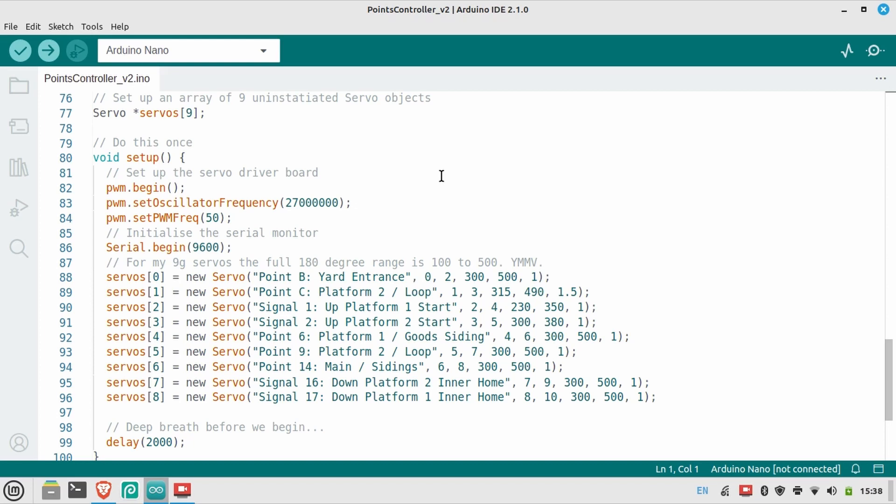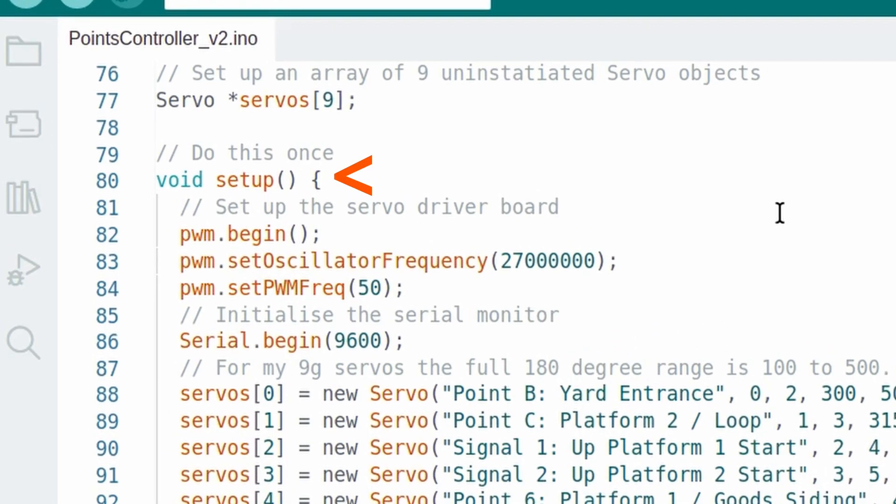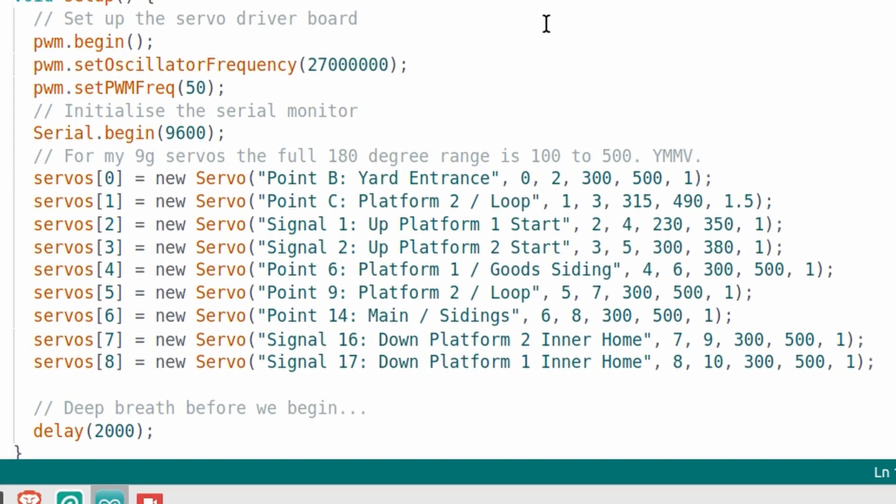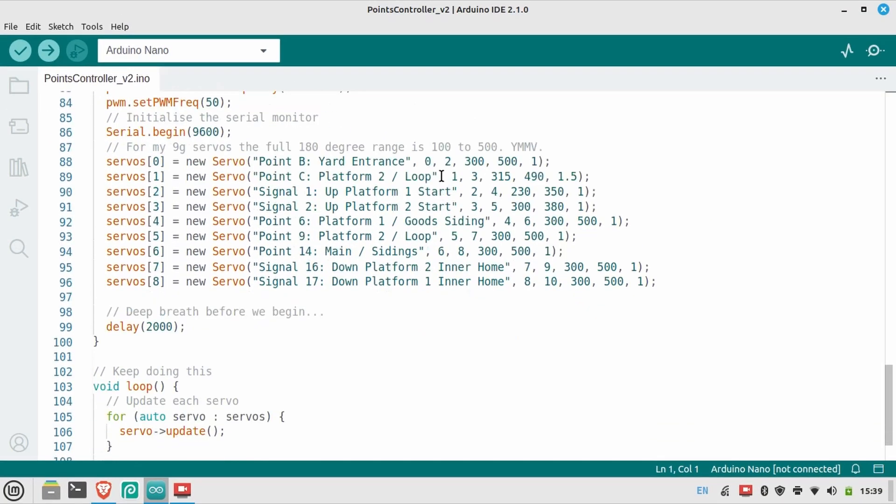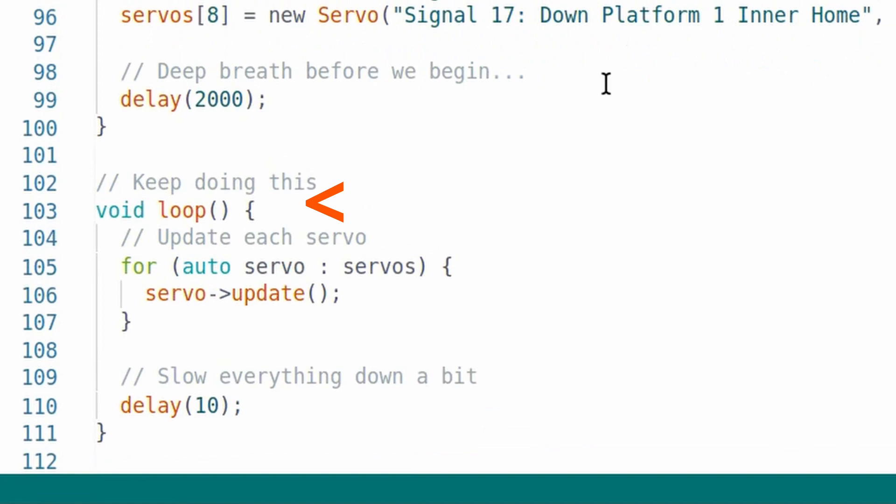First off, if you've done any programming with an Arduino before, you'll recognise the setup function, which does all the setting up. In particular, we're creating an array of servo objects, telling each one things like which pin the servo is attached to, which pin the button is on, the range of the servo, how quickly it should move, that kind of thing. Then, in the loop function, we go through each of those servo objects and update it. Again and again, in a loop.